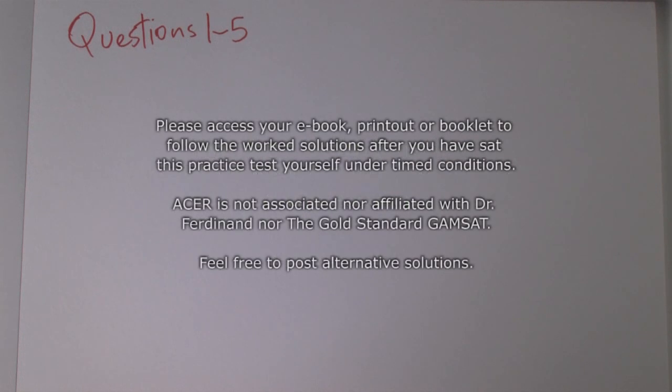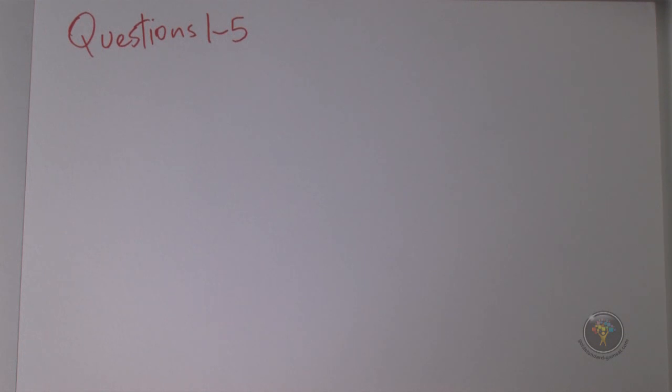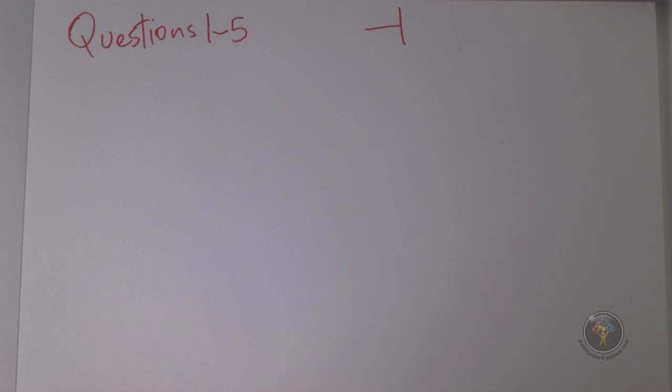GAMSAT practice test 2, also known as the purple booklet — questions 1 to 5. We have a passage about hormones, stomach acid, and the enzyme pepsin, which digests proteins as a protease in the stomach. Somatostatin has some inhibitory action. The diagram tells you what dotted and solid arrows mean; the inhibition symbol used for somatostatin on chief cells and parietal cells is a common one, as is a negative sign for negative feedback.